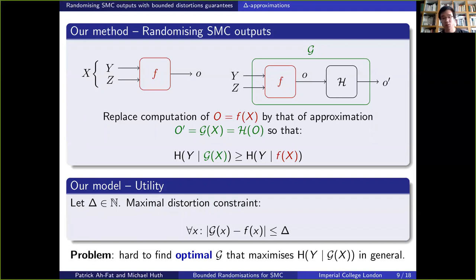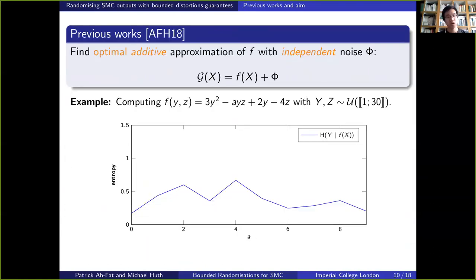The post-processing inequality displayed on the slide says that the output of the approximation g reveals less information than that of the original function f, which is exactly what we want. However, and as mentioned before, we also wish to offer some utility guarantee and we're going to impose a threshold delta on the maximal distortion introduced by approximation g. The problem that we faced is that it is hard to find an optimal such randomization that maximizes the conditional entropy of y given g of x in general.